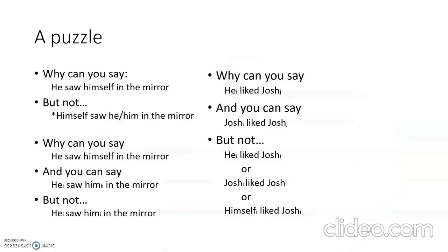Going back to our puzzle: why can you say 'he saw himself in the mirror', but not 'himself saw he in the mirror'? Why can you say 'he saw him in the mirror' where him refers to a different entity, but not when him and he refer to the same entity? Similarly, why can you say 'he likes Josh' where he refers to someone else like Enzo, but not 'he likes Josh' or 'Josh likes Josh' when they refer to the same entity? These puzzles will be resolved when we talk about the principles of binding.